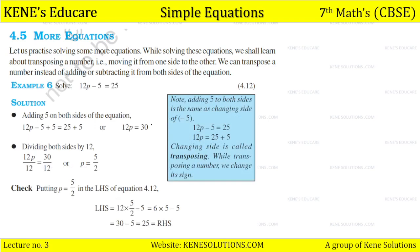How do we do this? Here's an example: 12p minus 5 equals 25. Adding 5 on both sides of the equation, plus 5 minus 5 is canceled, and 25 plus 5 gives 12p equals 30. Now dividing both sides by 12, we get p equals 30 upon 12, which is 5 upon 2. Note that adding 5 to both sides is the same as changing the side of minus 5, which means minus 5 becomes plus 5.